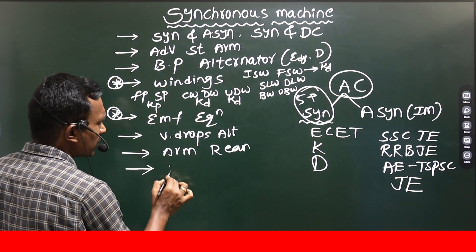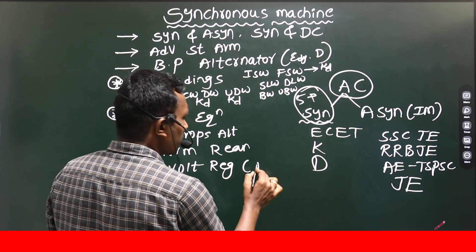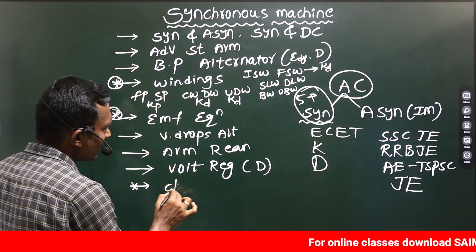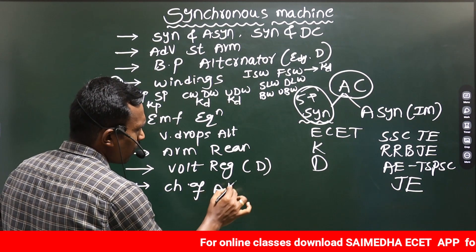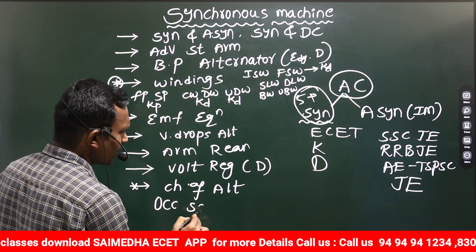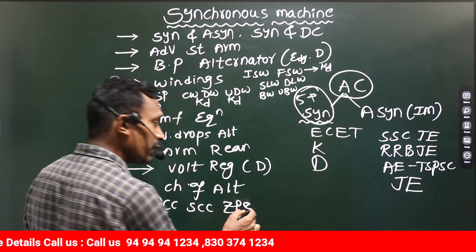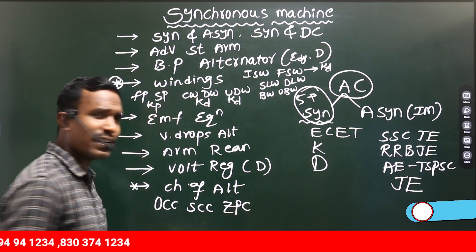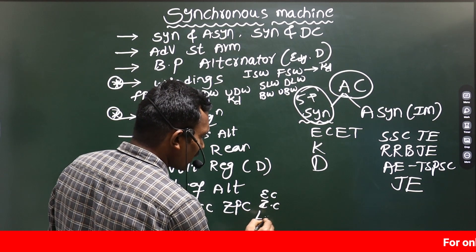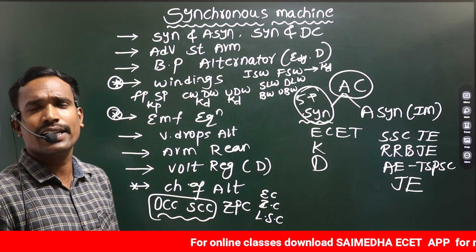What voltage drops are included? Then after, what is the armature reaction — very important. After armature reaction, what is voltage regulation? What is the direct method of voltage regulation? Then we go for the characteristics of the alternator: open circuit characteristics, short circuit characteristics, zero power factor characteristics, external characteristics, internal characteristics, load saturation characteristics. These are very very important, especially OCC and SCC characteristics.